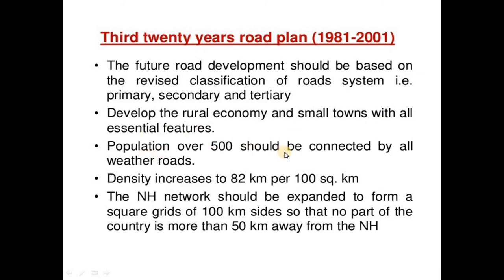Populations over 100 should be connected by all-weather roads. Road density was to increase to 82 kilometers per 100 square kilometers. The NH network should be expanded to form a grid of 100 km squares so that no part of the country is more than 50 kilometers away from a national highway.